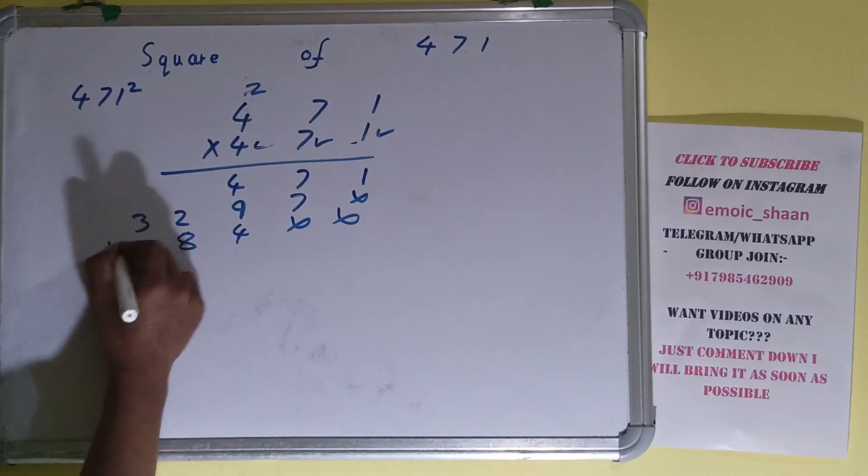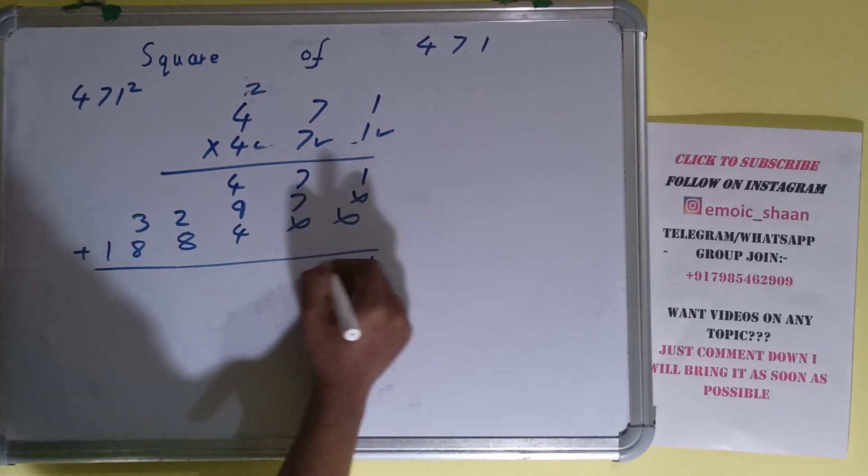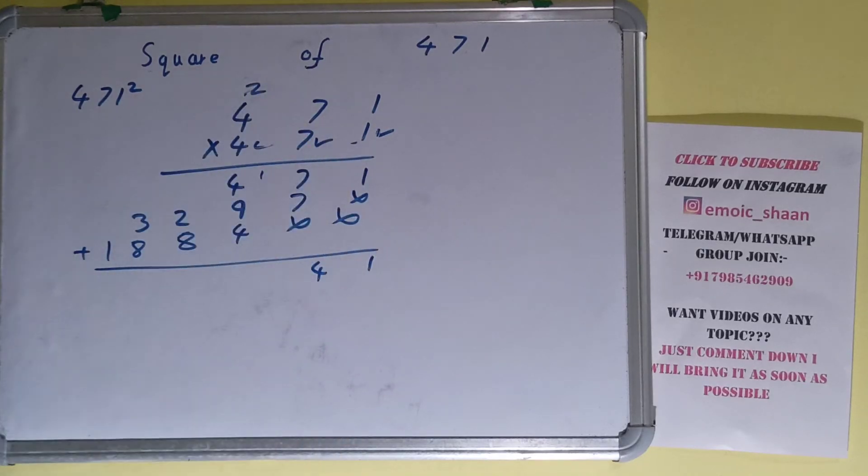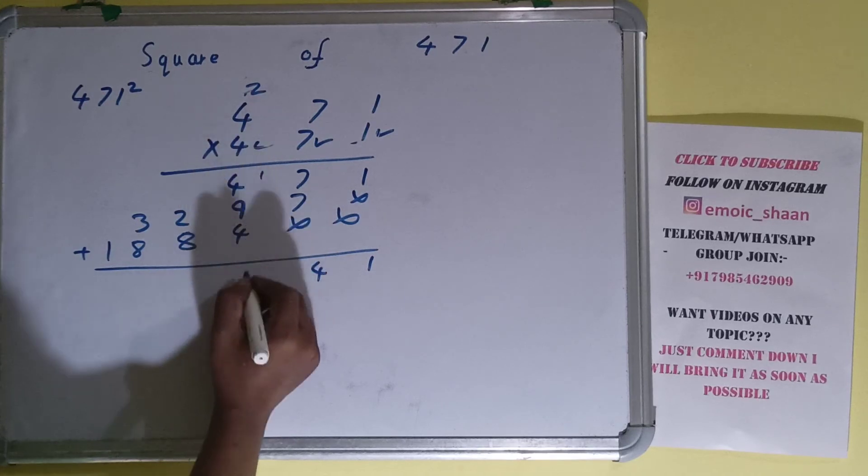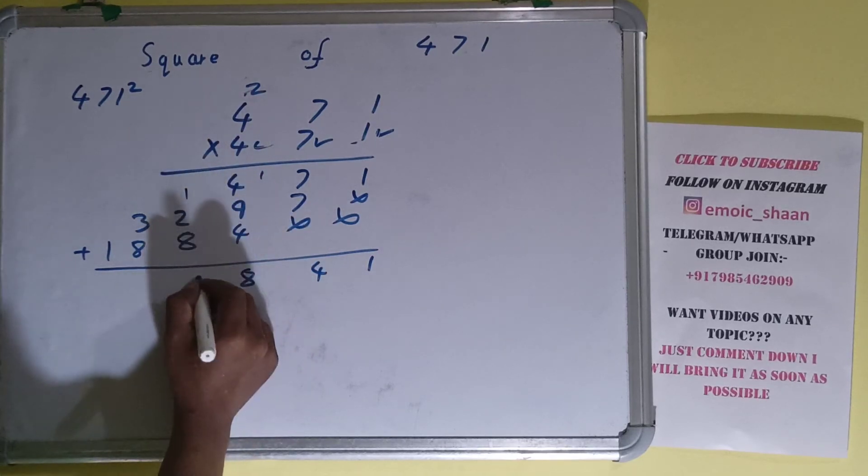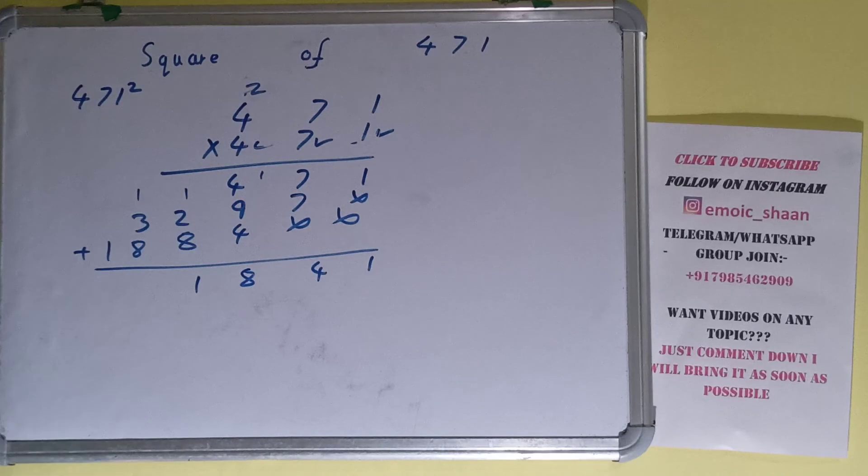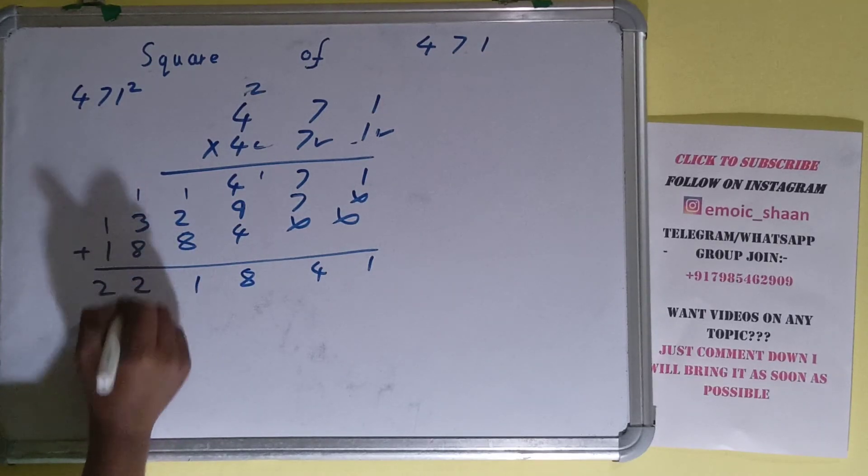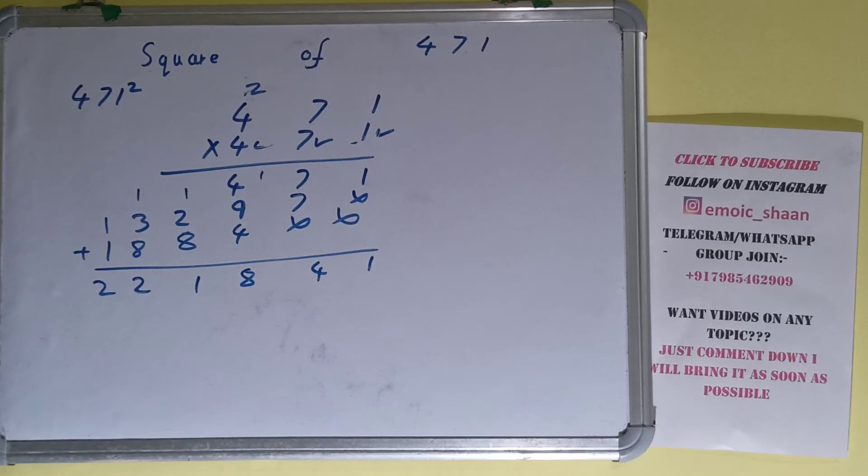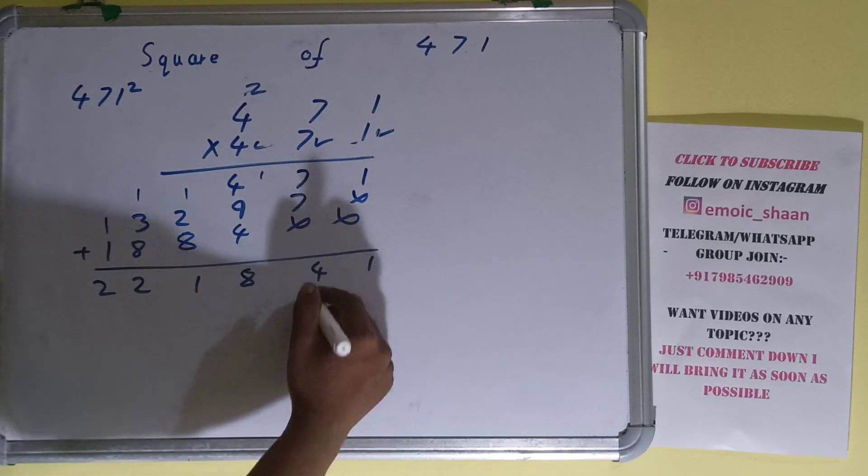And everything: one, four, one here, four plus one five, fourteen plus four eighteen, one here, one, one here two, one here two. So the answer will be 221841, that will be square for the number 471.